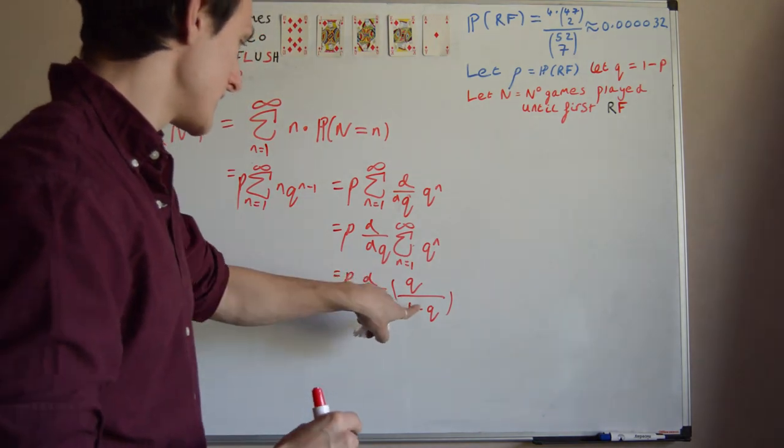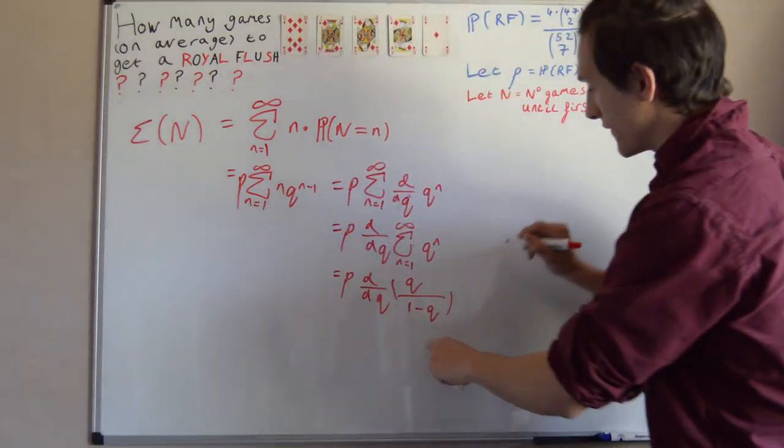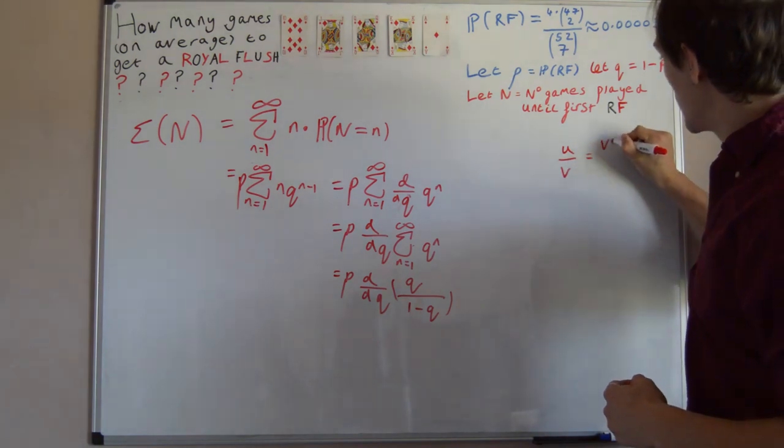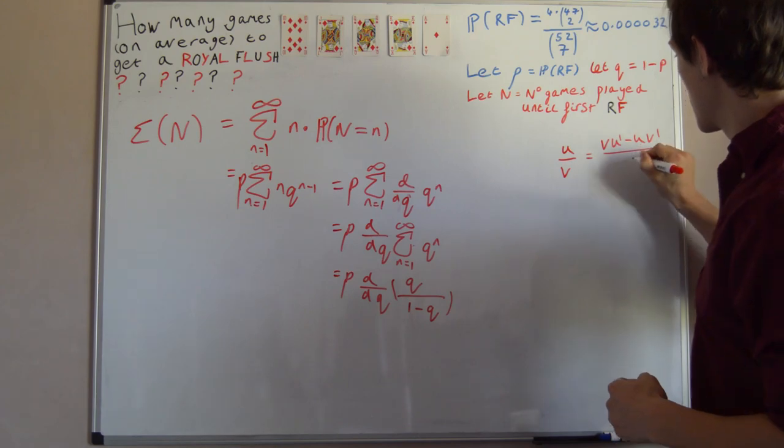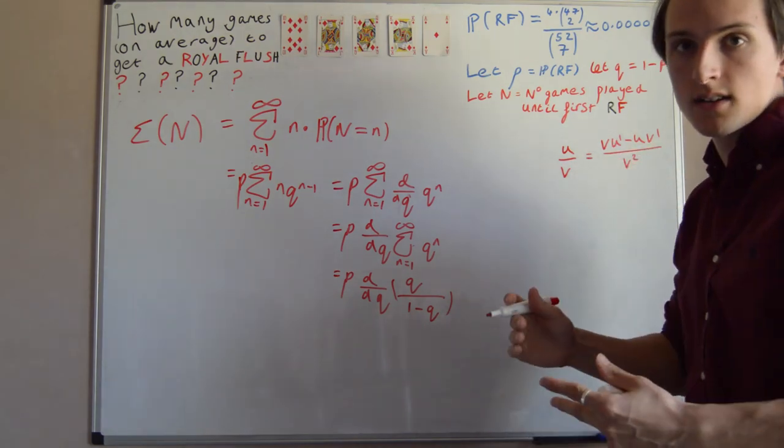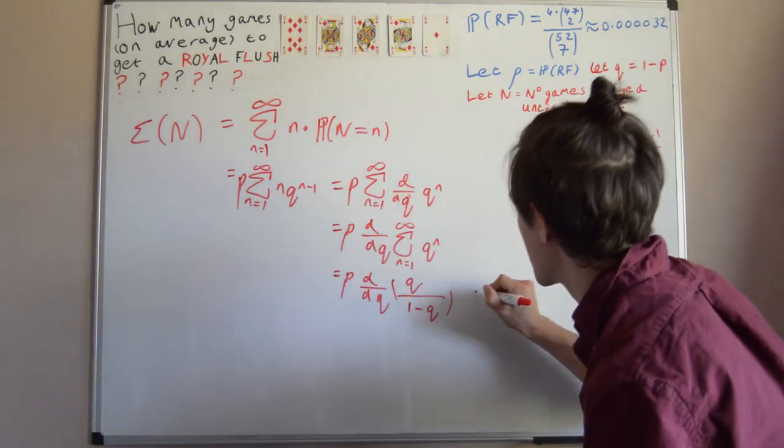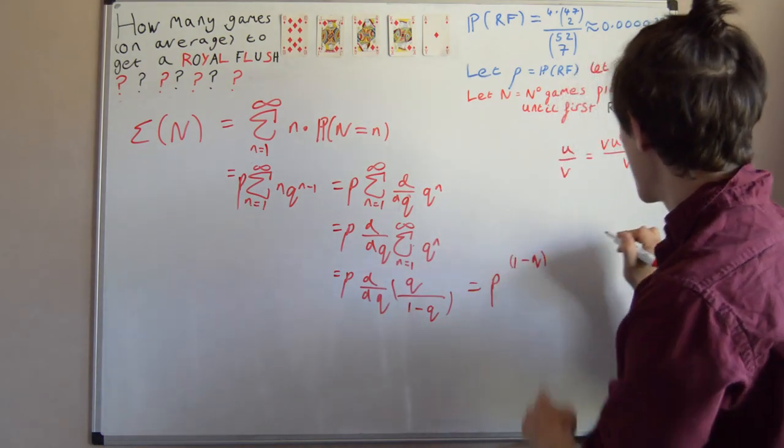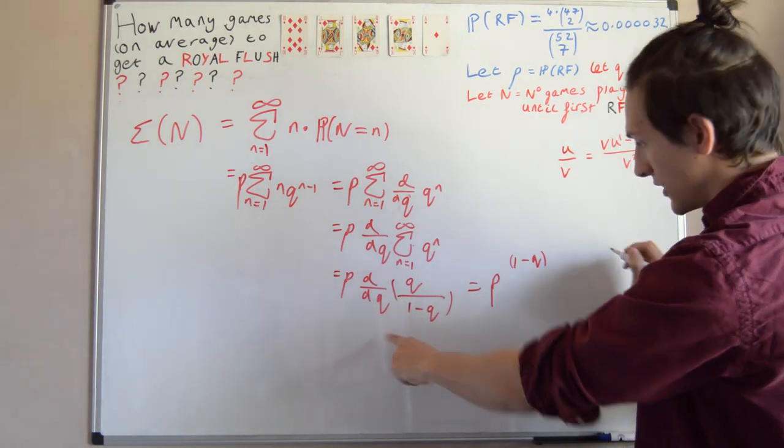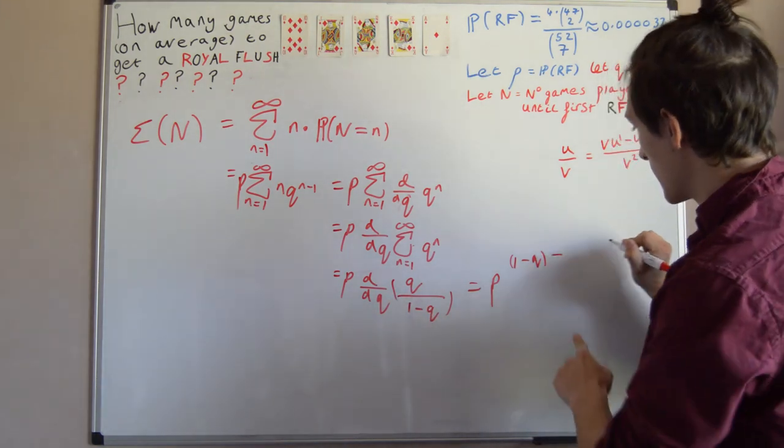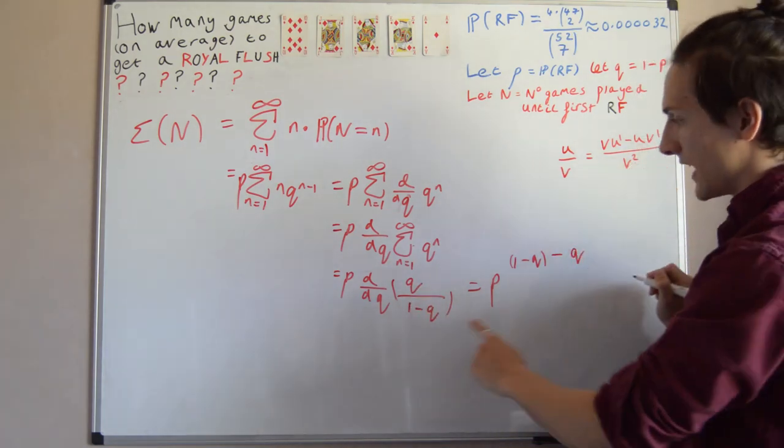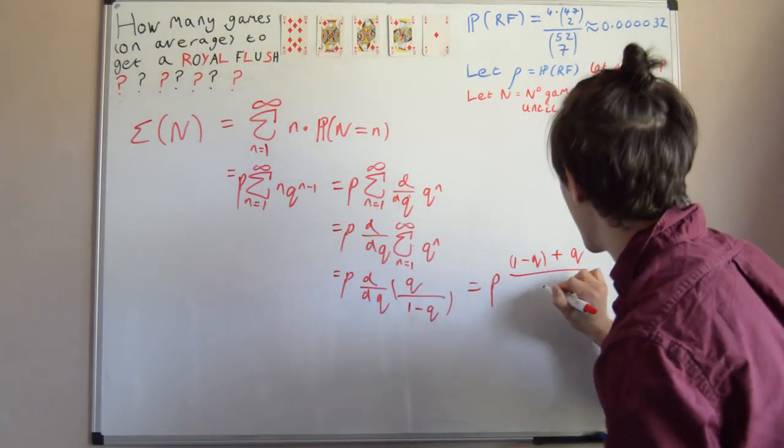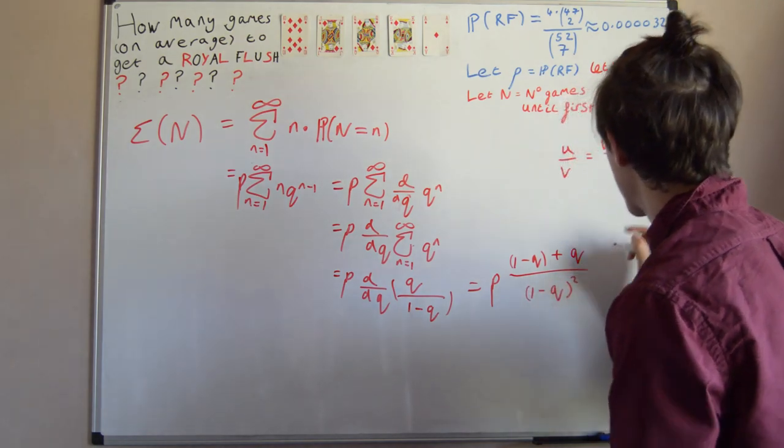Now, take the derivative of this thing with respect to Q. We get, well, the derivative of something of the form U over V is V U dash minus U V dash over V squared, where U dash and V dash means the differential. So, let's get into that. We have P times the thing on the bottom, 1 minus Q, times U dash, the differential of this with respect to Q, which is just 1, so I won't write anything down. Then we have minus U times V dash, the differential of this, which is going to be minus 1. So this becomes a plus. And then we're dividing this entire thing by 1 minus Q squared, the thing on the bottom squared.